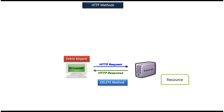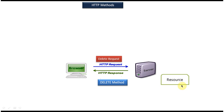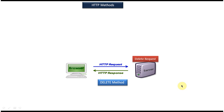Next we will see the DELETE method. On the server side some resource exists. If I want to delete or remove that resource from the server, then I can use the DELETE method. The client sends a DELETE request to the server and then the resource will be deleted.